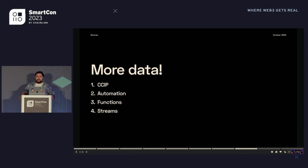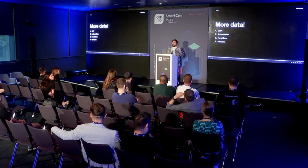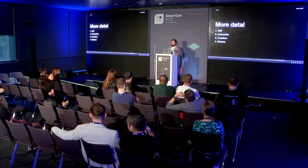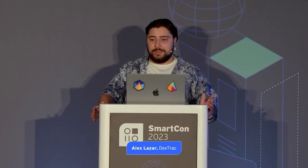Another important goal is bringing more data. What you've seen so far is really only OCR — it's a drop in the bucket. We've got CCIP, automation, functions, and streams. There's a lot more data we can bring on. You'll also be able to separate the OCR data we currently have for specific feeds, so you can compare feeds individually the way you compare networks. There's a lot of work to do and we're up for it.